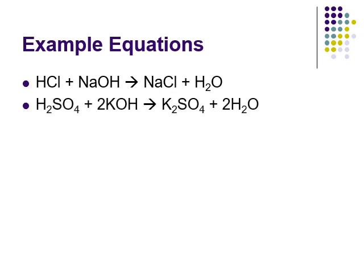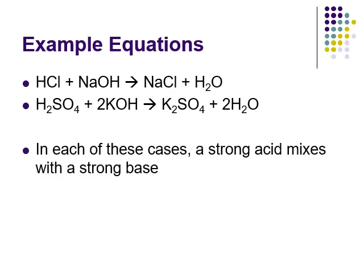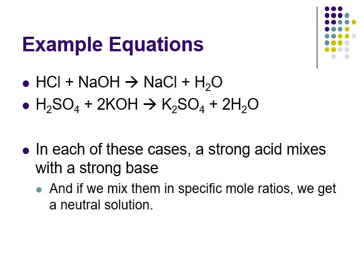Here's another example that's a bit trickier: sulfuric acid with potassium hydroxide. Notice we need two of the potassium hydroxides for every one sulfuric acid, because sulfuric acid is diprotic — it has two hydrogens that ionize. For a complete balanced equation, we need twice the amount of potassium hydroxide. If we mix them in just the right ratio, one-to-two here, we would get a neutral solution.